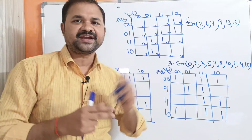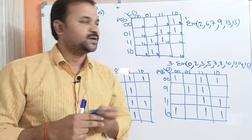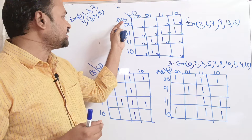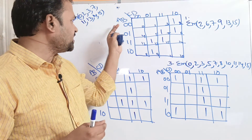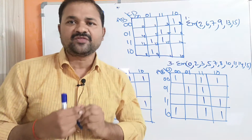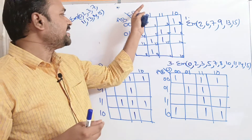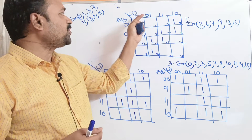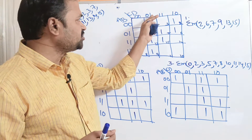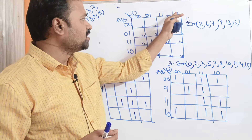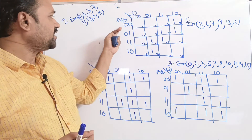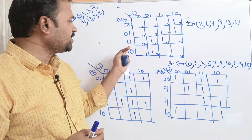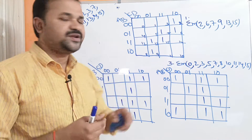First let us see how we can draw the table. Here we have four variables. We write the first two variables AB on the left-hand side and CD on the top. The possible combinations are 00, 01, 11, 10, and likewise for both axes.